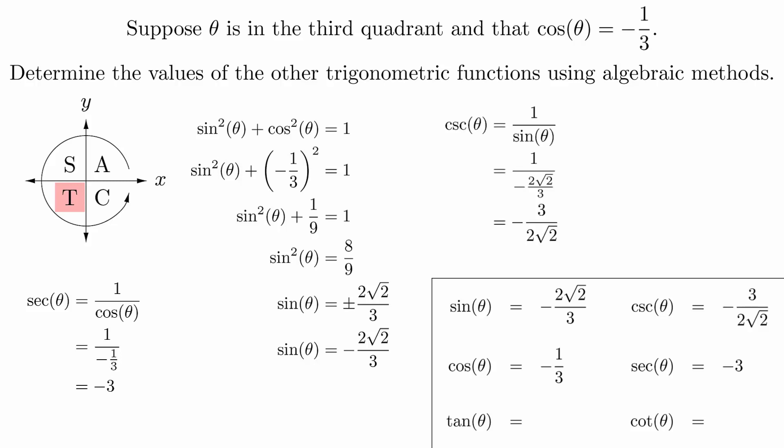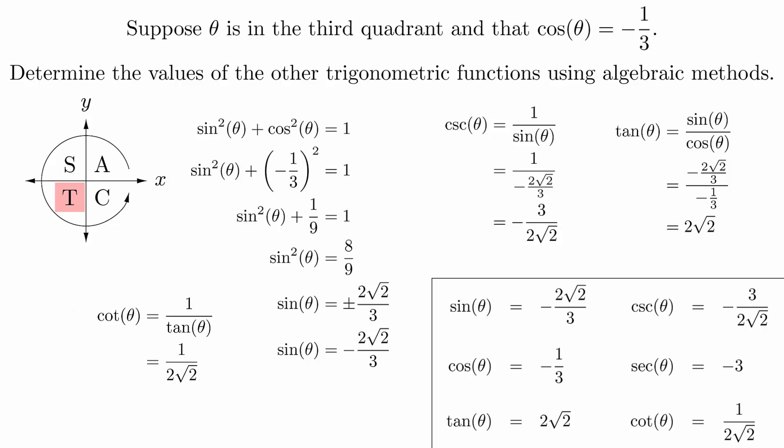From here, we can also get cosecant theta by taking the reciprocal of sine theta, and then we can get tangent theta by taking the ratio of sine theta over cosine theta, and lastly get cotangent theta by taking the reciprocal of tangent theta.